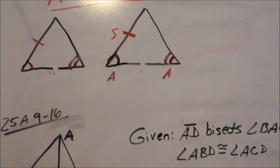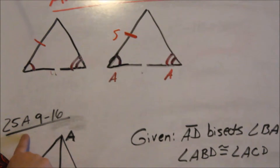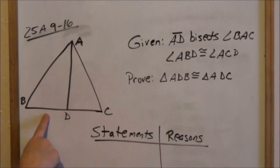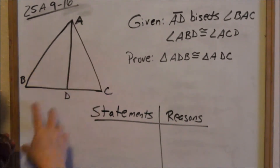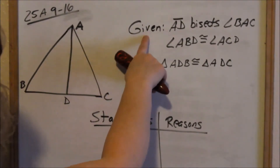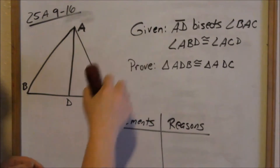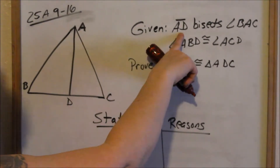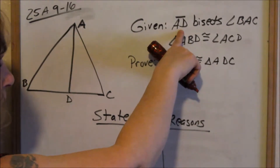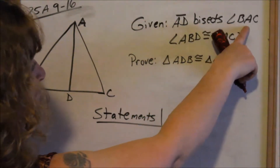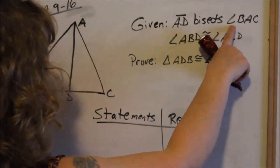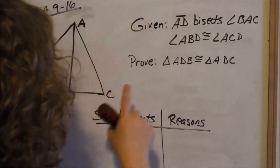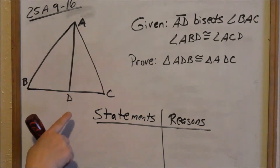Let's look at some examples — 25A, problems 9 through 16. We have these two triangles and our given statement. Remember, the first thing you want to do is look at your given. The first thing we are told is that line segment AD bisects angle BAC.